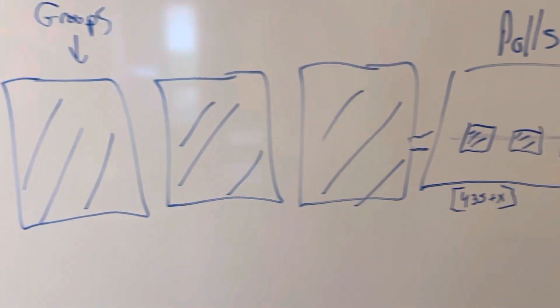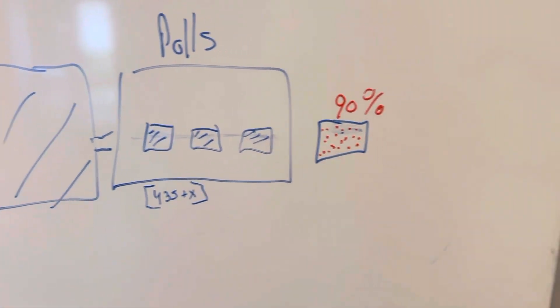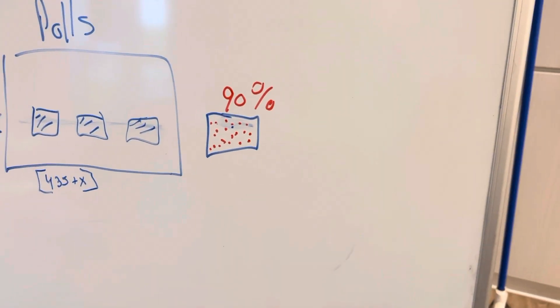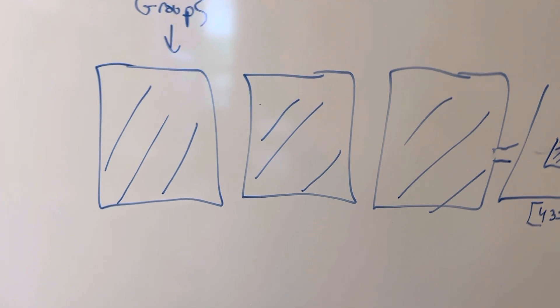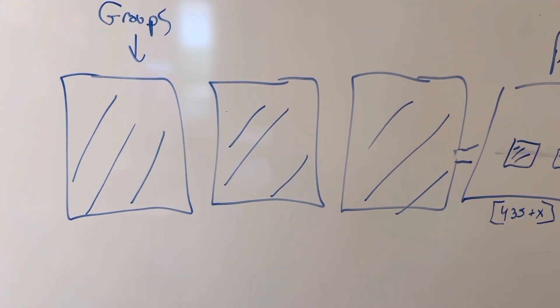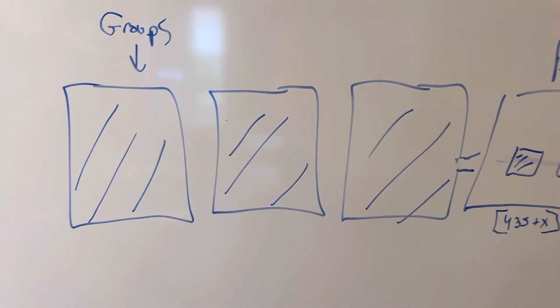But if you put them in groups and you send groups to the polls, well, now you have many fewer possible outcomes. Not only can you anticipate what these groups will do at the polls, you can affect the process and get a predetermined outcome that you want.